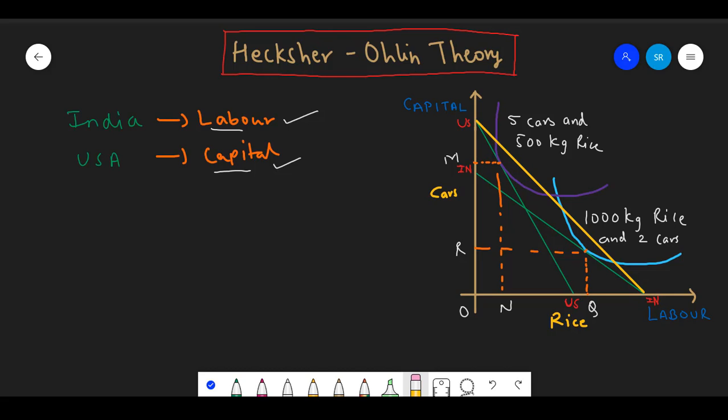As the factor price line has gone up for both the countries, it will move them on a higher iso-quant. This showcases that both the countries will enjoy higher units of cars and rice.